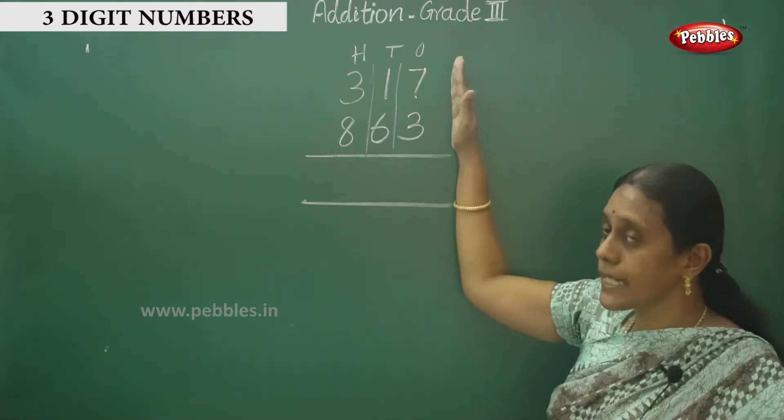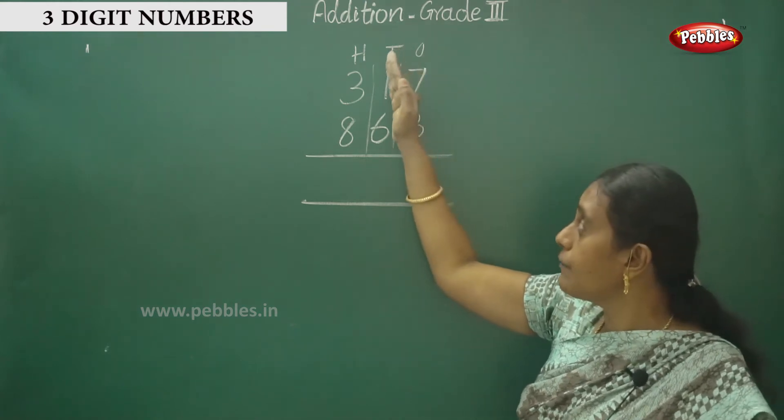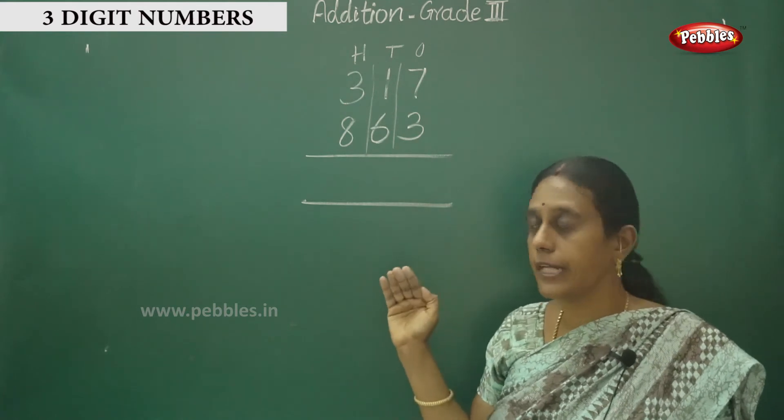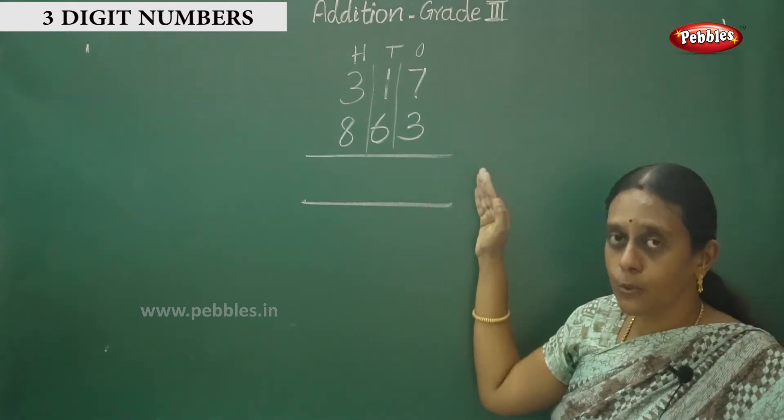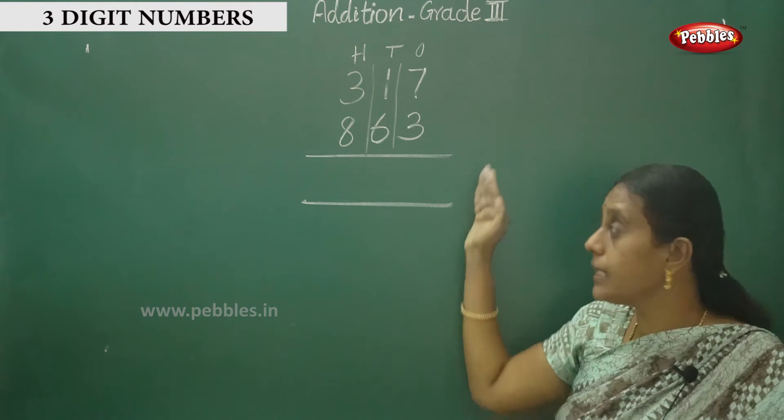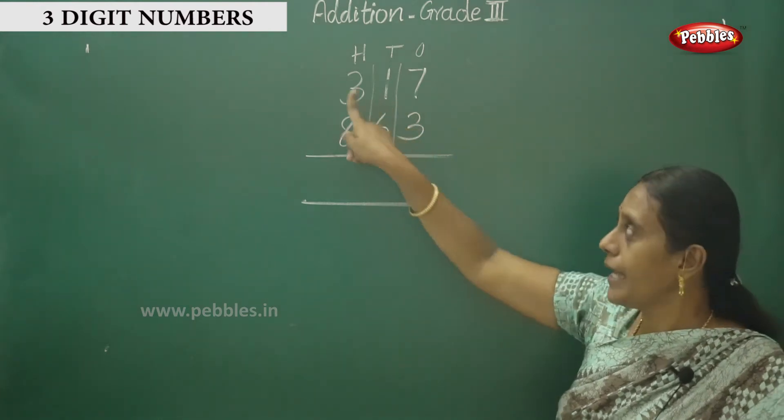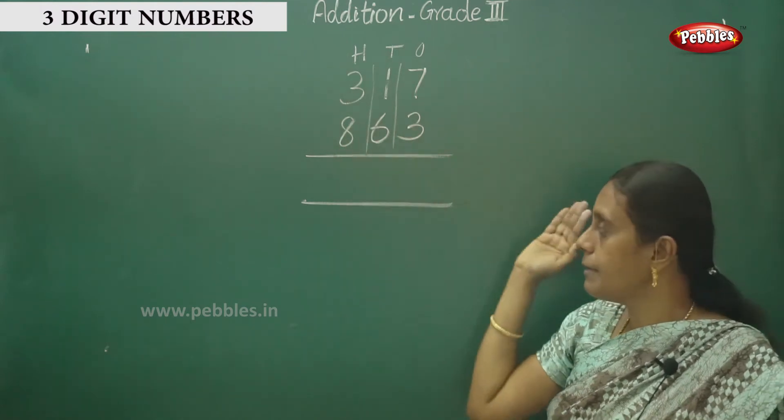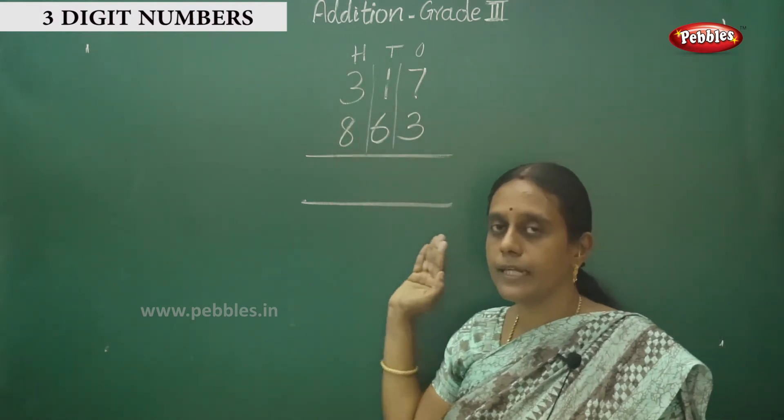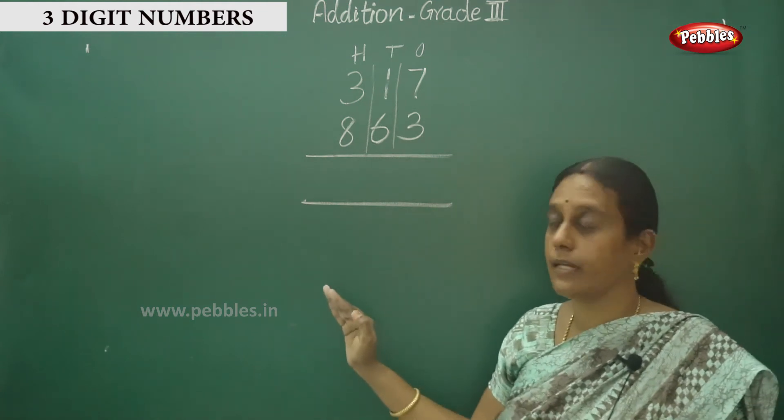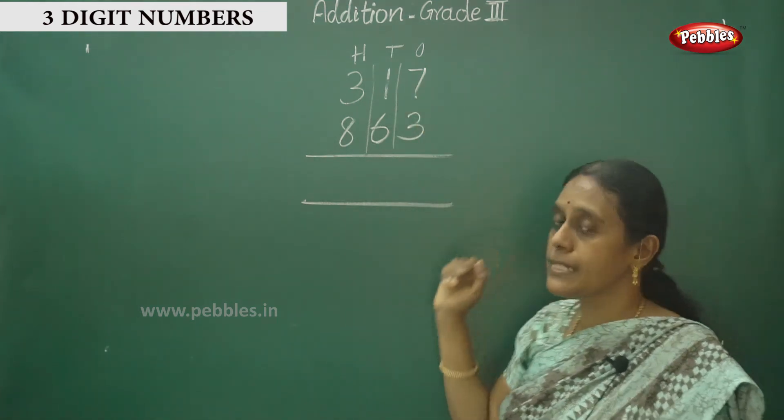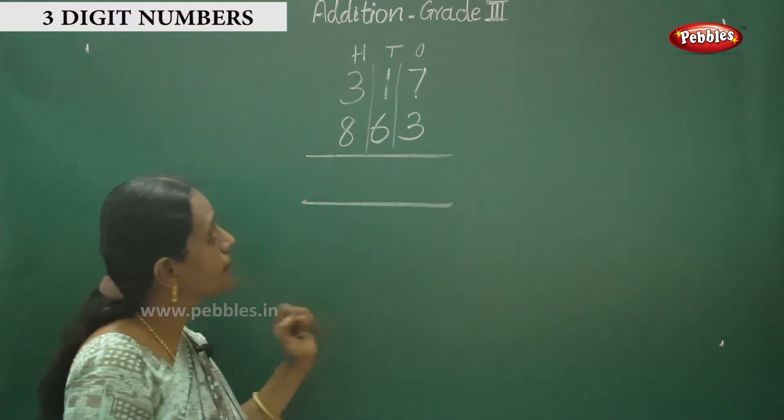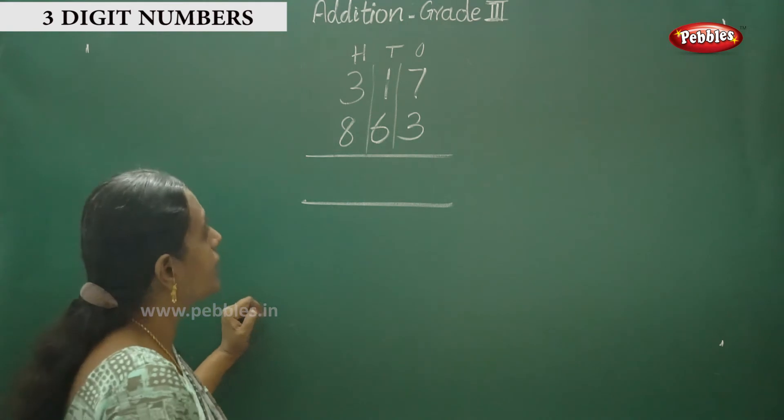Seven plus three. Finish the ones place, then you have to move to tens, and then only you have to move to hundreds place. Start from the right side, finish that digit, then jump over to tens, then add the hundreds place. This is how we use place value.